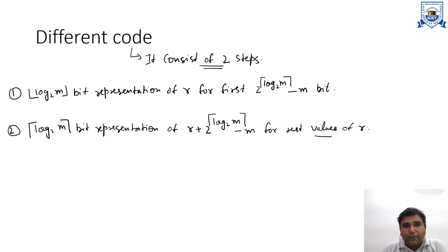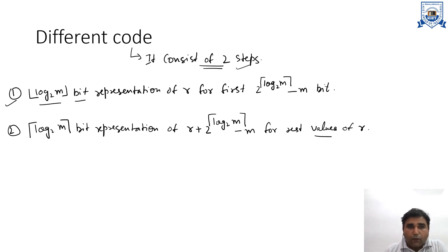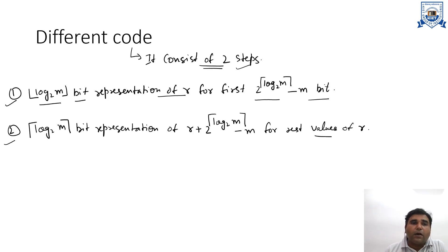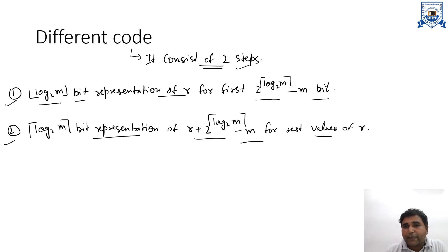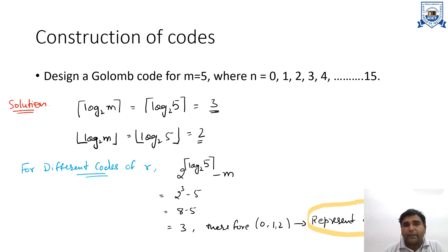Now, the truncated binary (different) code has two steps. The first step uses floor(log₂ m) bits to represent R, for the first 2^(ceil(log₂ m)) − m values of R. The second step uses ceil(log₂ m) bits to represent R plus 2^(ceil(log₂ m)) − m, for the remaining (plus) values of R. These two steps are used to generate the Golomb codewords. Now let's take an example.